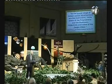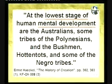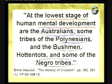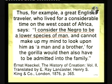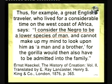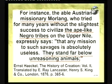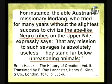Haeckel published 'The History of Creation,' and I'm embarrassed to read these statements, but I want you to know what generations of college students were learning. His book stated: 'At the lowest stage of human mental development — the Australian Aborigines, Polynesians, and the Negro.' He wrote, 'I consider the Negro to be a lower species of man' and could not 'look upon him as a man and a brother.' He also cited a missionary who supposedly tried without success to civilize what he called 'ape-like negro tribes' who 'stand far below unreasoning animals.'